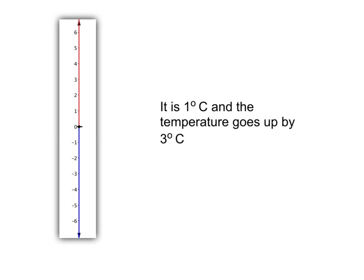OK, let's do some calculations with temperature now. If we know it is 1 degree centigrade and the temperature must go up by 3 degrees centigrade, what will we end up with? Well, the temperature is now 1 degree, so we go to 1, then we need to go up by 1, 2, 3 degrees, and we'll get that we are now at 4 degrees centigrade. We can summarise this by saying if we are at 1 and we go up by 3, we will end up at 4.